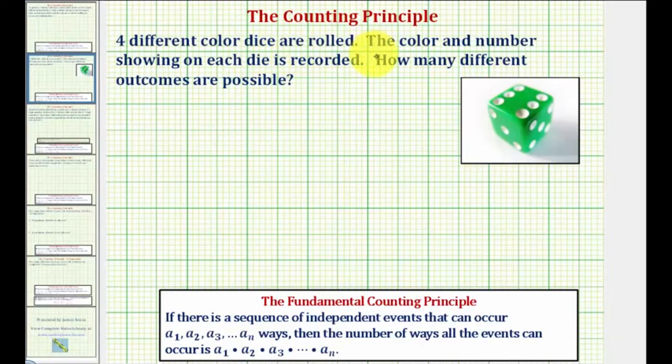Four different colored dice are rolled. The color and number showing on each die is recorded. How many different outcomes are possible?